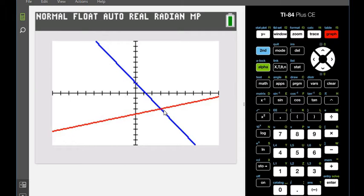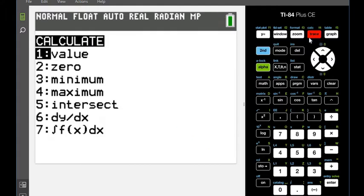The graphing calculator is very helpful, especially if they don't intersect at a whole number. So what we can do is hit the second button, and above the trace it says calculate. There's calculations that you can do. So I'm going to hit second and trace. And remember, we're looking for the intersection point, so we're going to choose option 5.